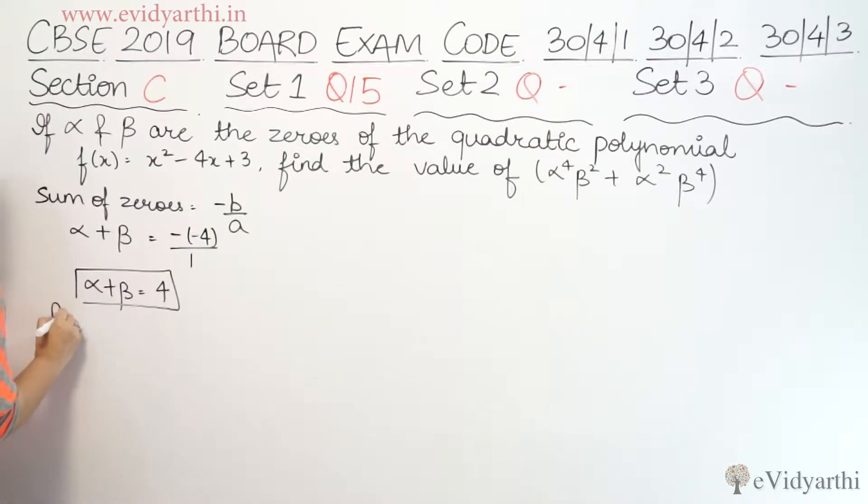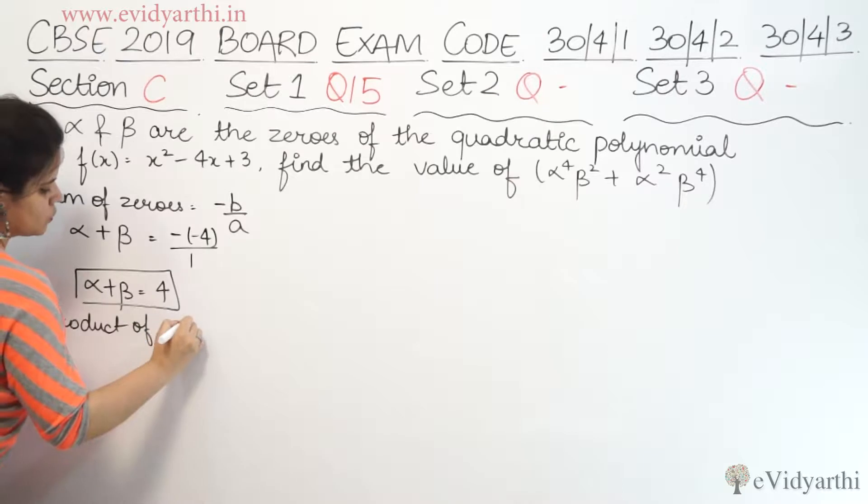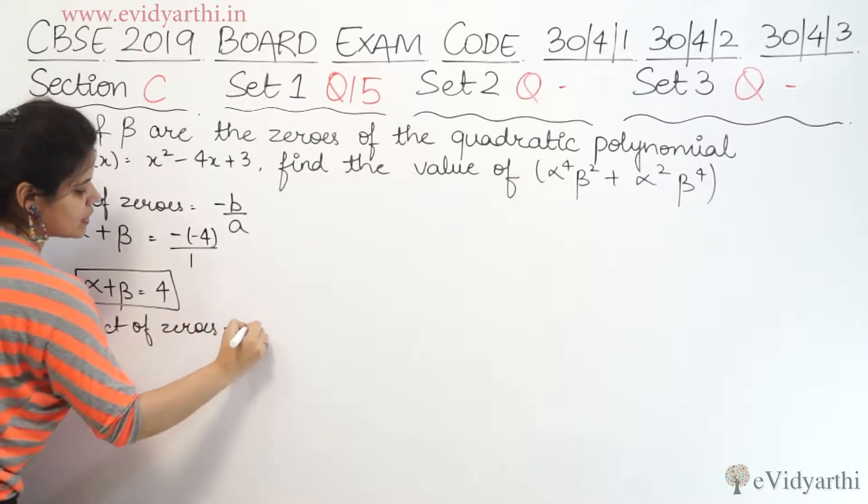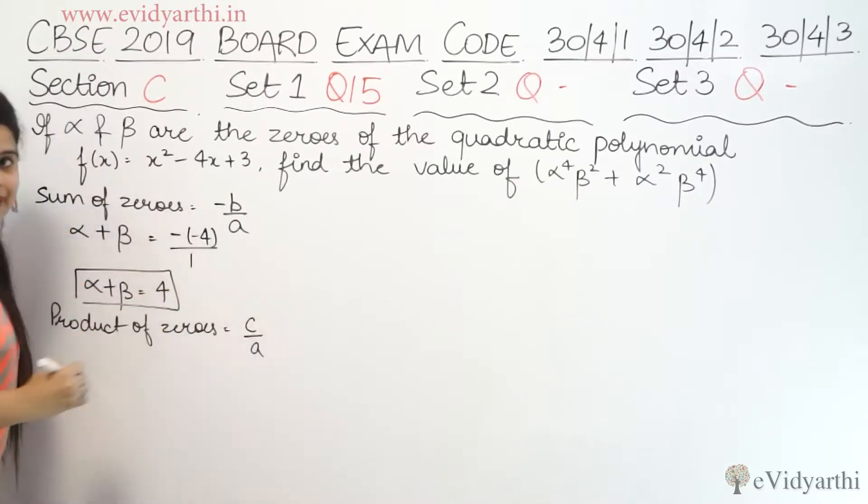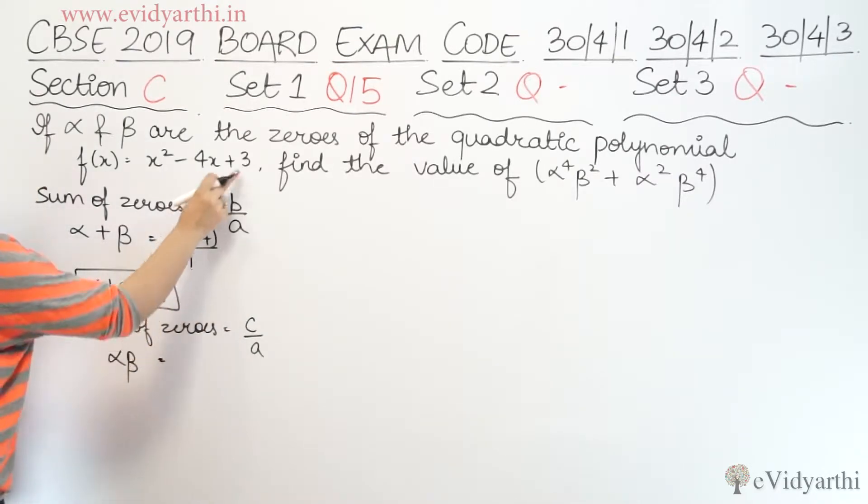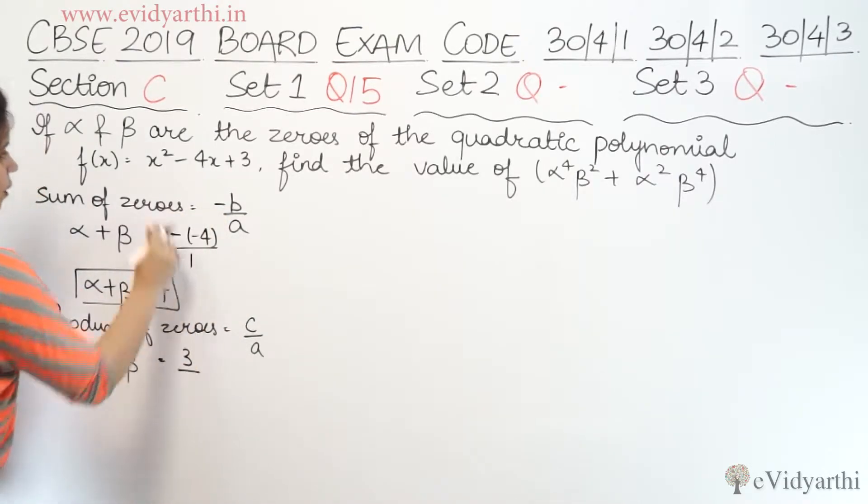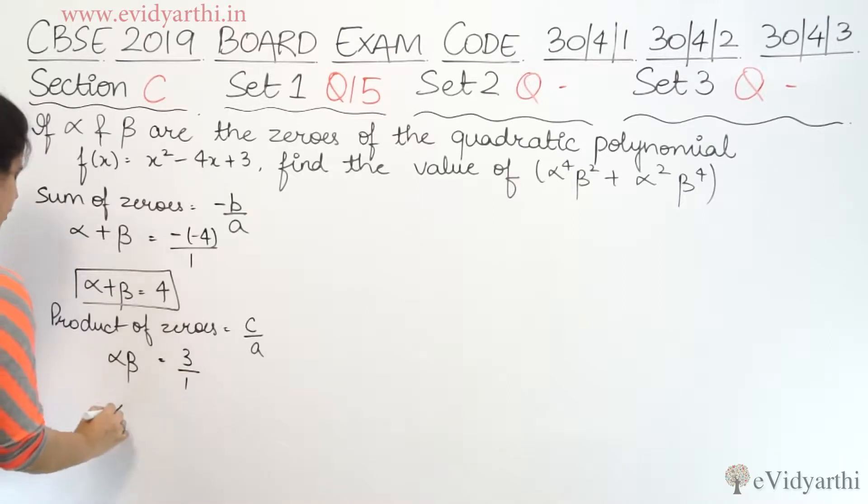Similarly, we have product of zeros. So product of zeros is c upon a, right? So product of zeros I can write as alpha into beta, and this will be equal to c upon a. c is 3, a is 1, therefore alpha beta equals to 3. So here we have alpha plus beta's value and alpha beta's value.